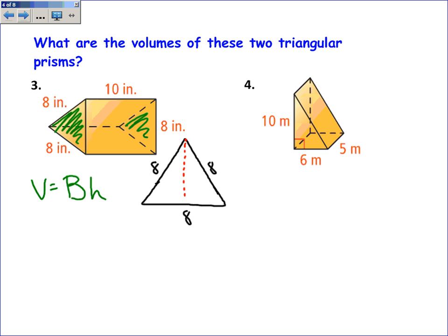But luckily, this right triangle is a special right triangle. It's a 30, 60, 90 right triangle, and so this part is 4, and so the height of my triangle is 4 root 3, if you know your special right triangle ratios. If not, you can use the Pythagorean theorem or some trigonometry to find what that height is, but it's 4 root 3.